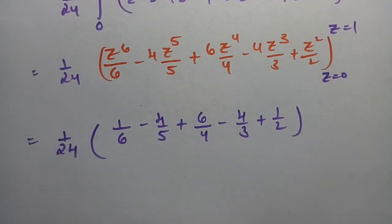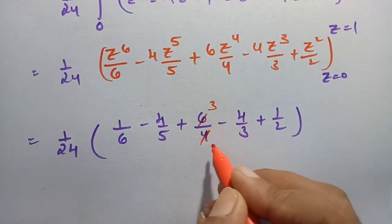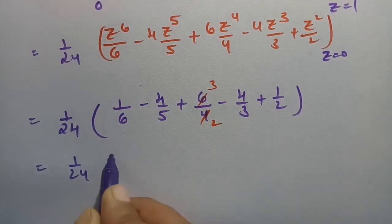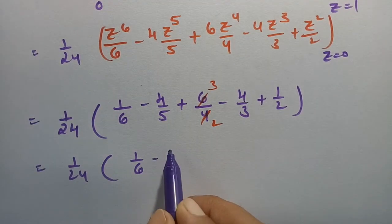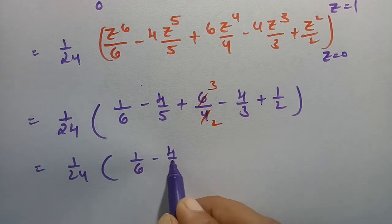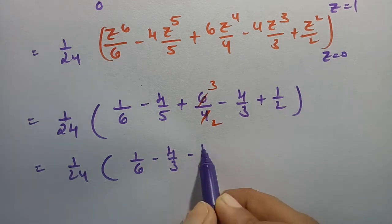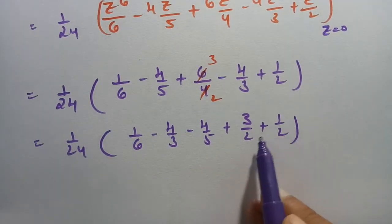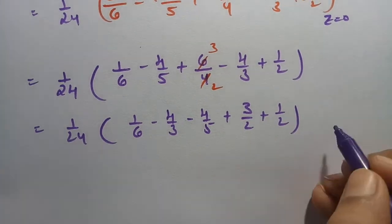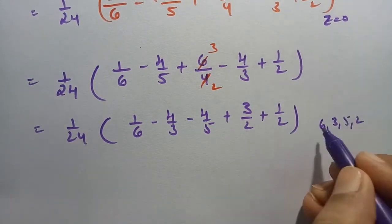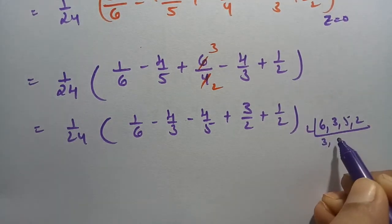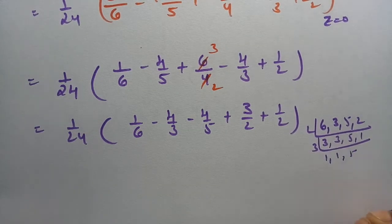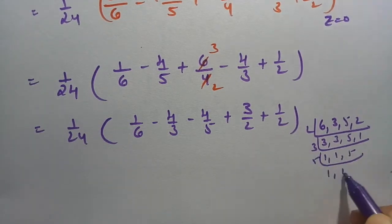Substituting z = 1: this will be 1/24 times (1/6 minus 4/5 plus 6/4 minus 4/3 plus 1/2). Simplifying: 6/4 cancels to 3/2 and the expression becomes 1/24 times (1/6 minus 4/5 minus 4/3 plus 3/2 plus 1/2). Taking LCM for 6, 5, 3, and 2.